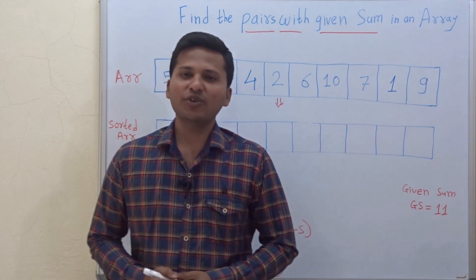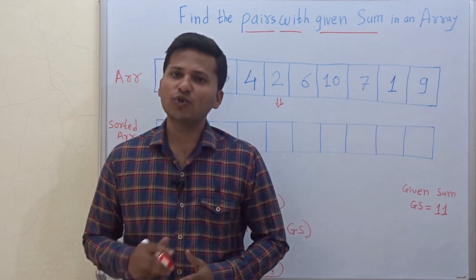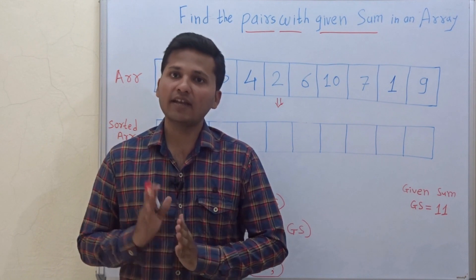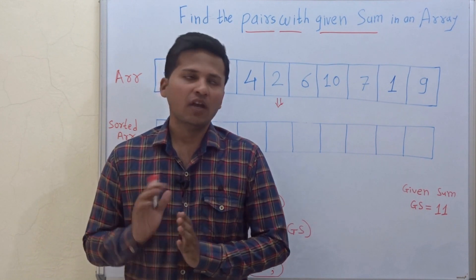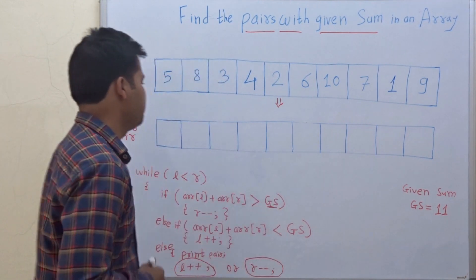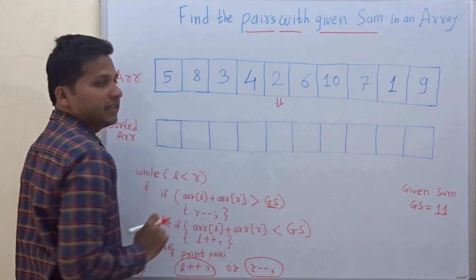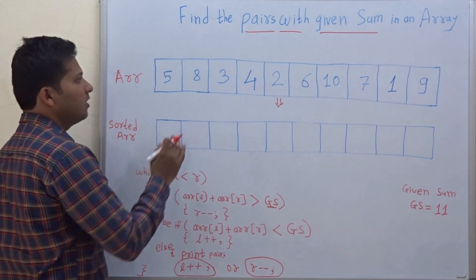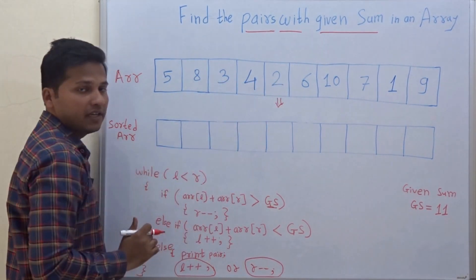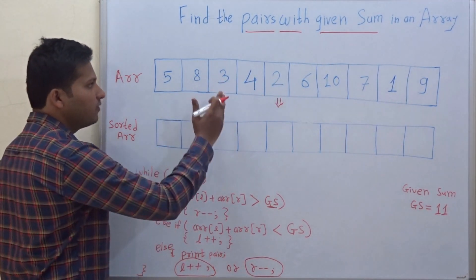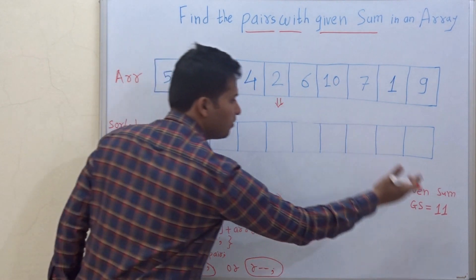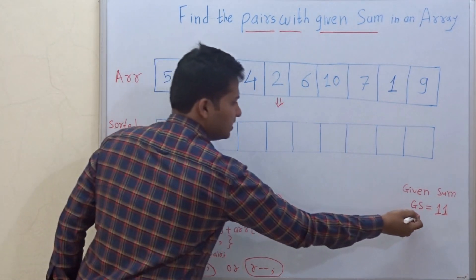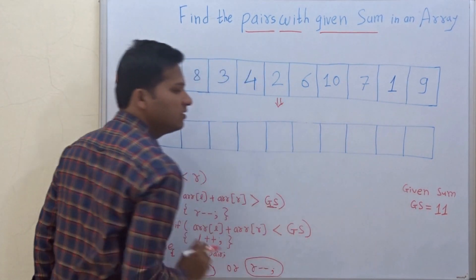Hello friends. Today we are going to see how to find the pairs with the given sum in an array. This is the array and we want to find all the pairs in this array which have the given sum 11. GS is the given sum.